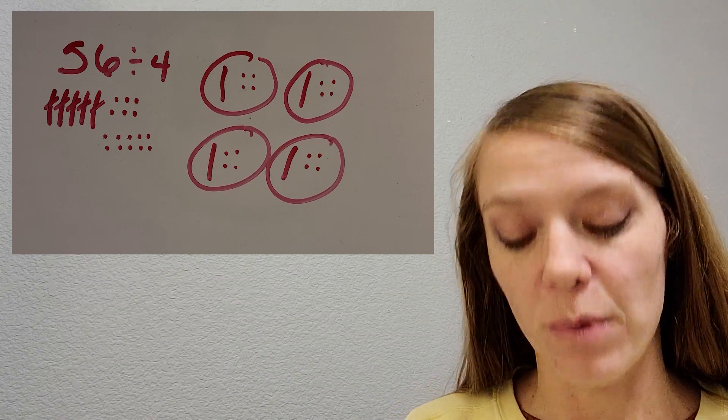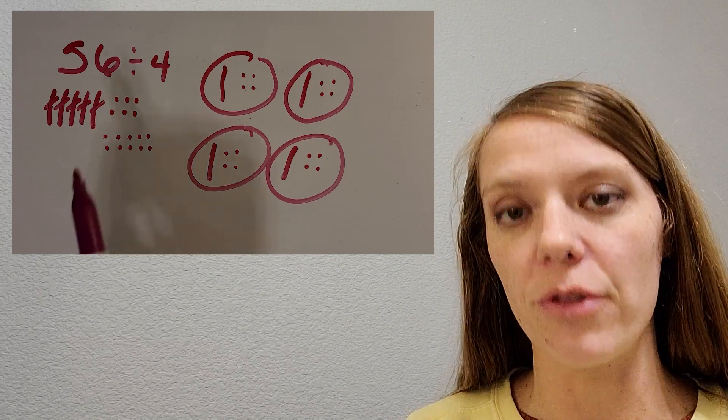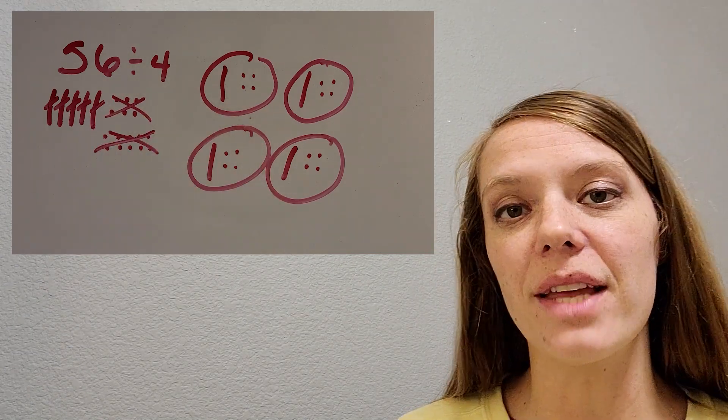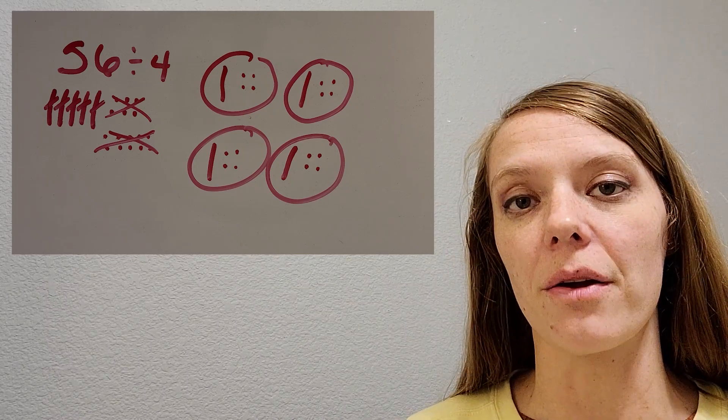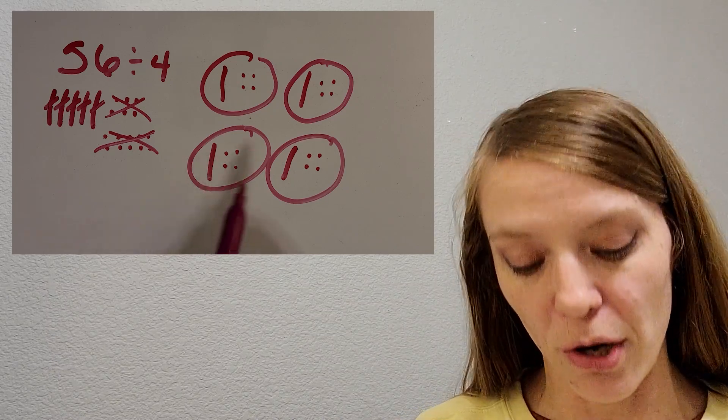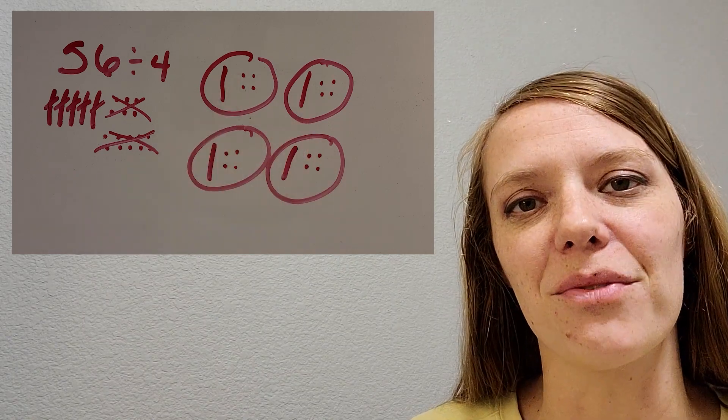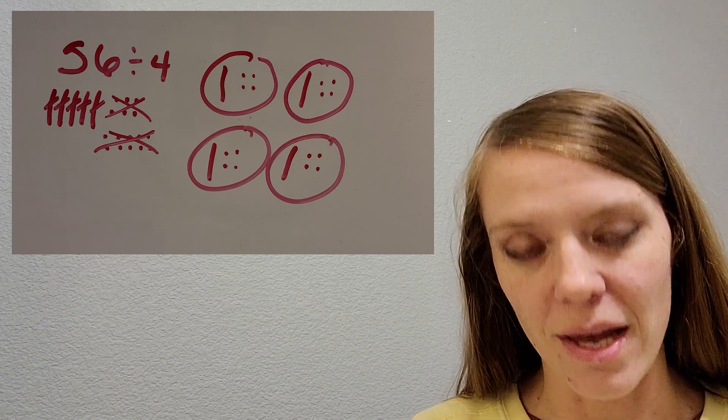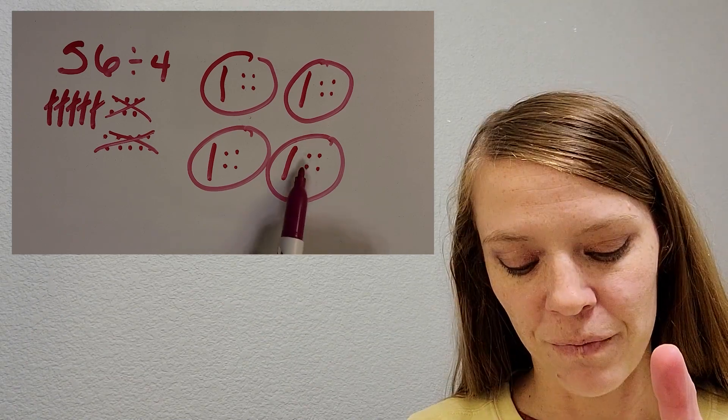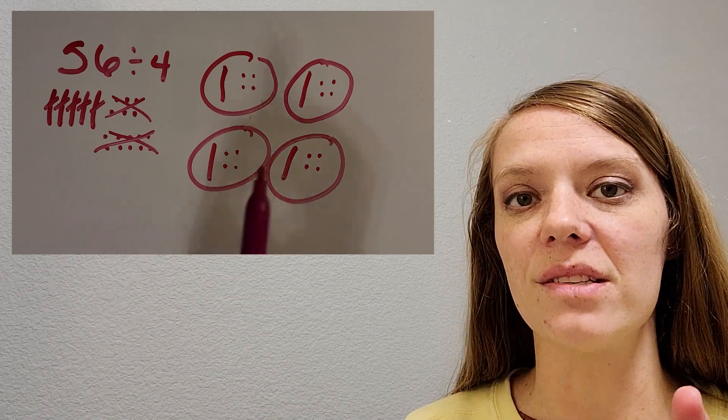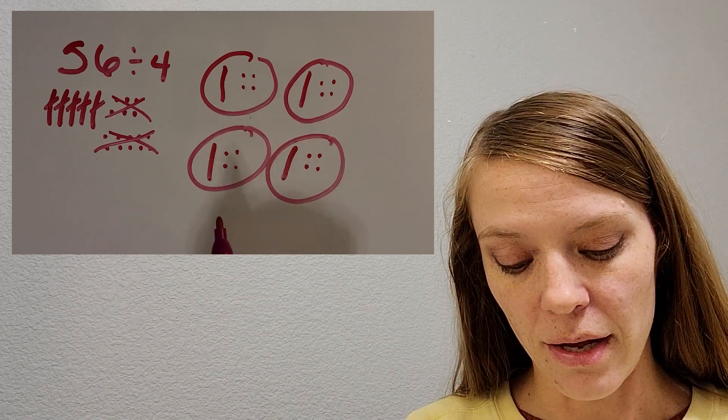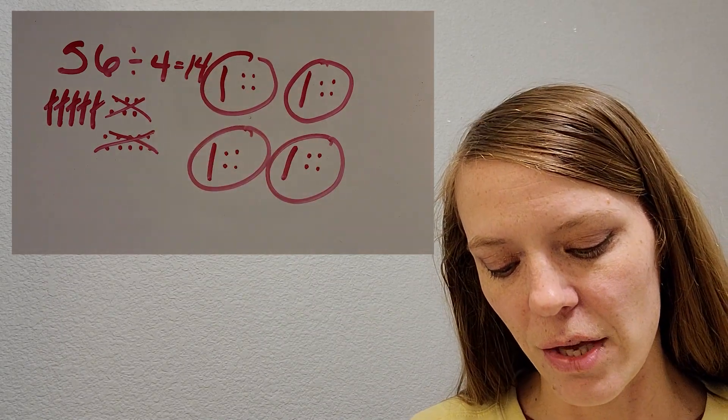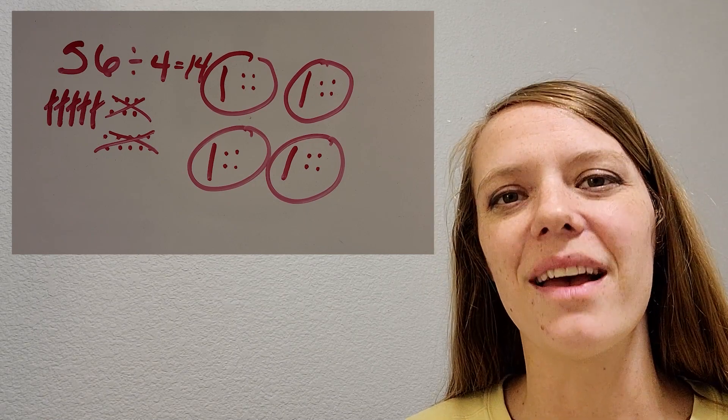I did. So now where do you think the answer is? Because it looks like we're done. We've separated every single thing. I'm going to cross those units out. Every single thing is in a group and it's all equally shared. It's a fair share. So it's perfect. So now where does the answer live? You might be noticing that in one group, there is a long and four ones. So that's 14. And so 14 is our answer. 56 divided by four equals 14 per group. Great job.